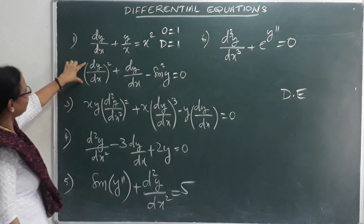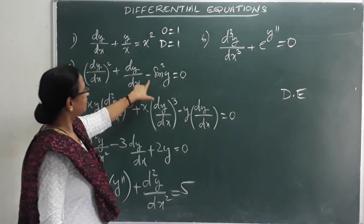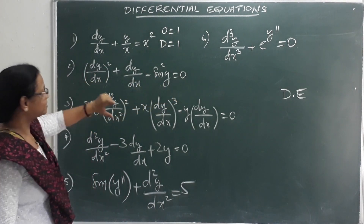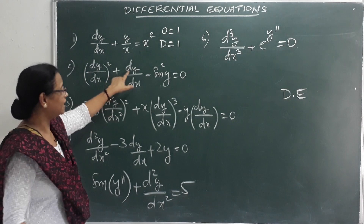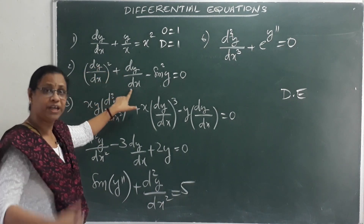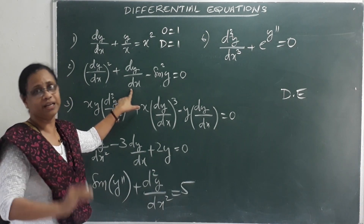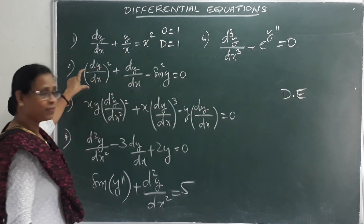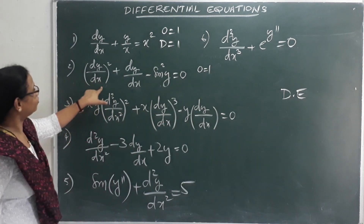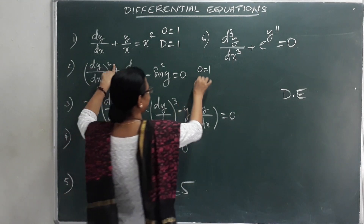The second question is: (dy/dx)² + dy/dx − sin²y = 0. What is the highest order? The derivatives present are dy/dx — there is no d²y/dx². So the order is 1. The power of dy/dx is 2, so the degree is equal to 2.